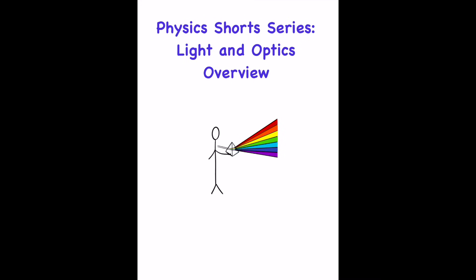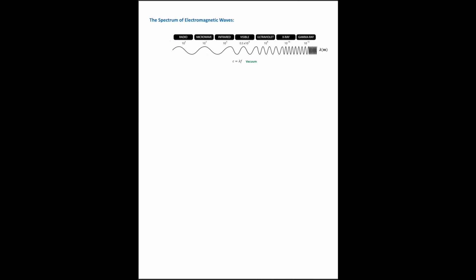This video is a general overview of the basic ideas in light and optics. Electromagnetic waves are produced by accelerating charges and travel in space with a speed of light equal to 3 times 10 to the power 8 meters per second. There are different types of electromagnetic waves, all differing in frequency and wavelength, from low frequency to high frequency. Since the energy of an electromagnetic wave is related to its frequency, this is the direction of increasing energy.